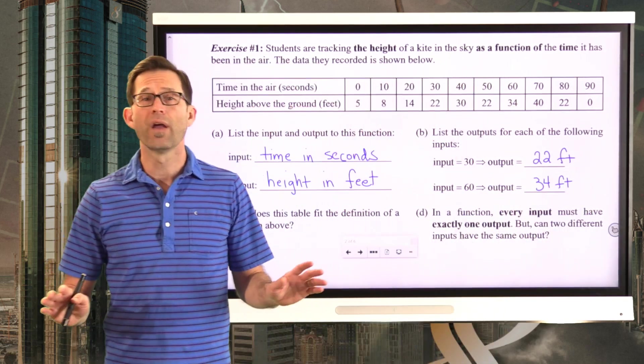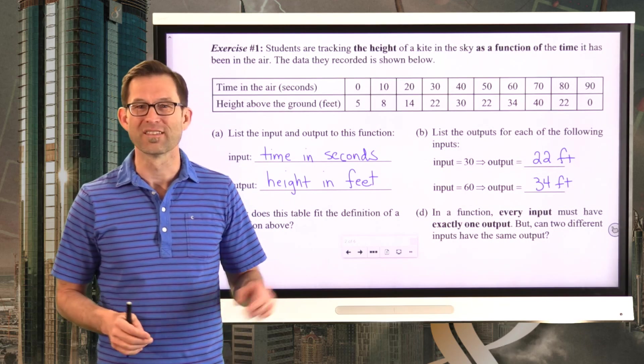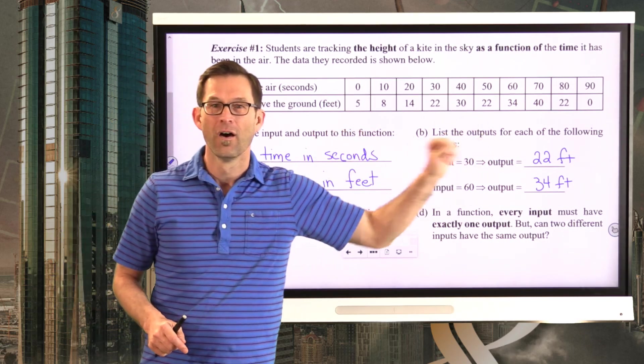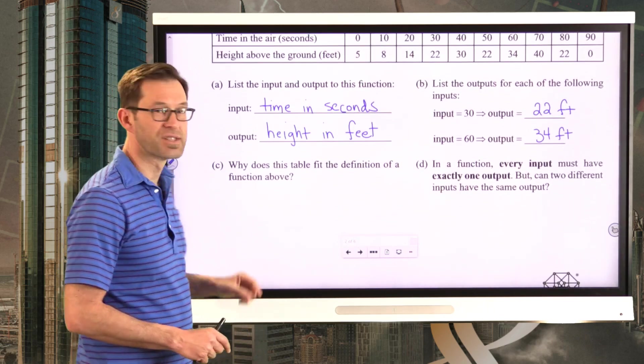Very easy, especially when you have a table as your rule that's assigning outputs for given inputs. Now, let's take a look at letter C.